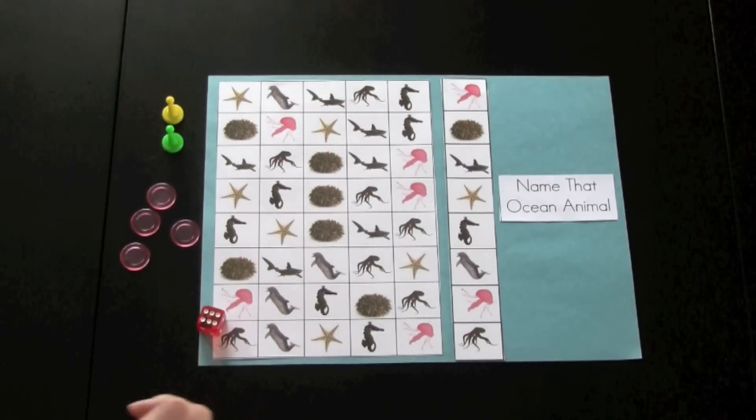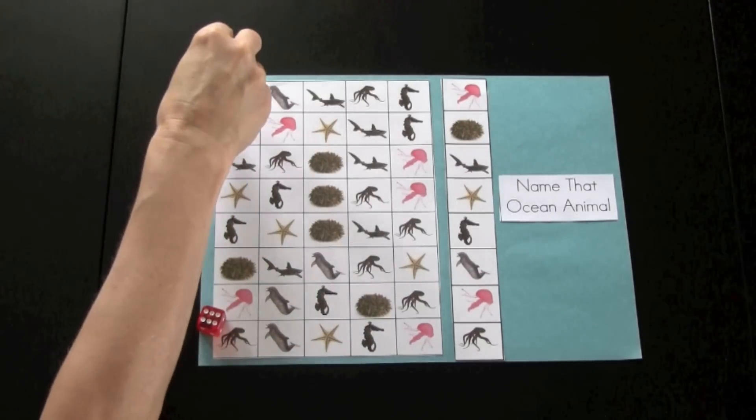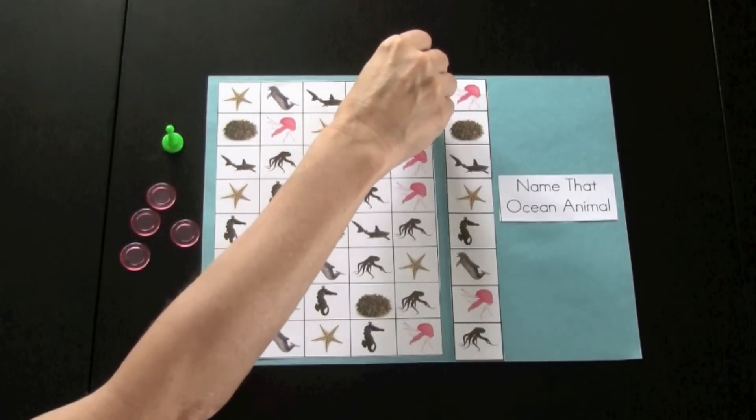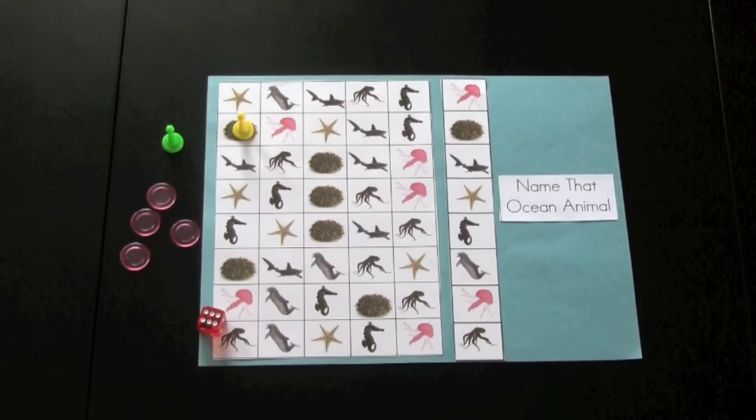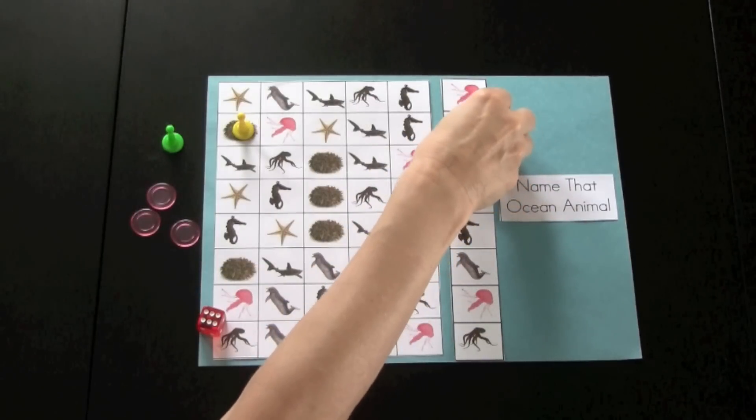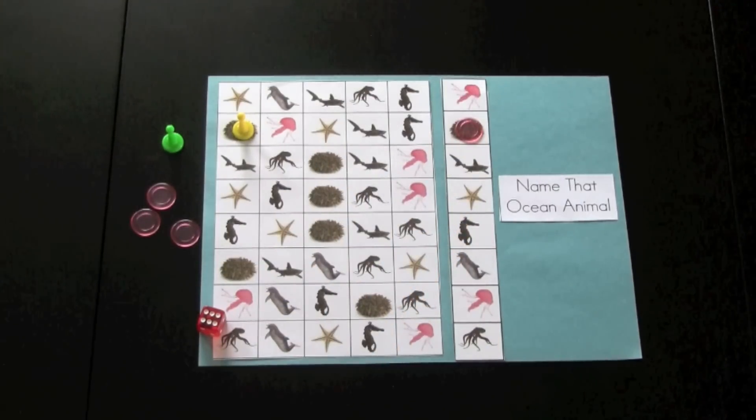Player one shakes a die. They have rolled six, so they would move their game player that many spaces: one, two, three, four, five, six. They have landed on a picture of a sea urchin, so they would put their bingo chip on that picture on their game board. The first person to have their game board completed would be the winner.